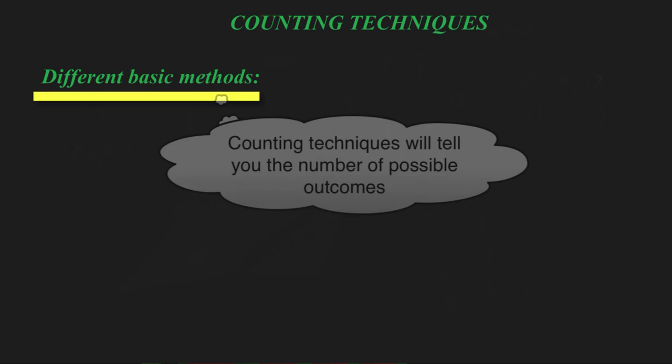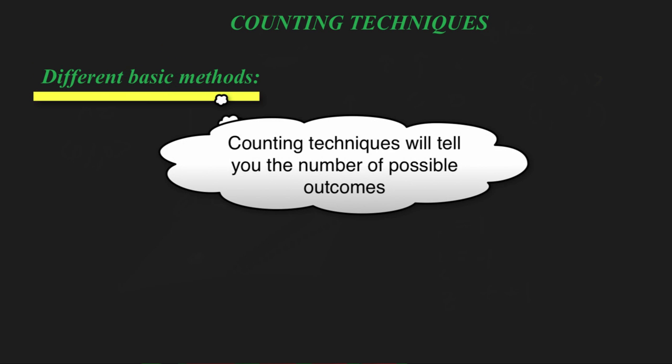There will be a more advanced video for permutations and combinations, but now we're just getting started. There are different basic methods for counting techniques, and what we're doing here is looking at the probable outcomes, the number of probable outcomes, depending on the scenario.